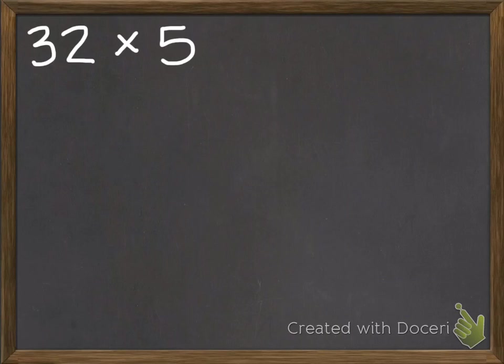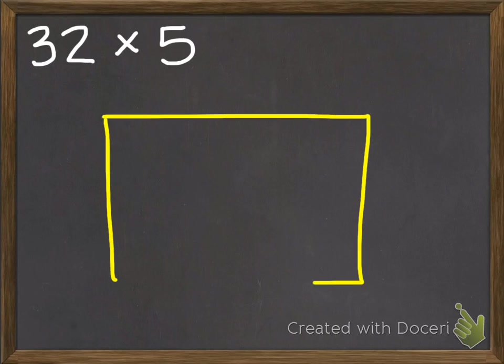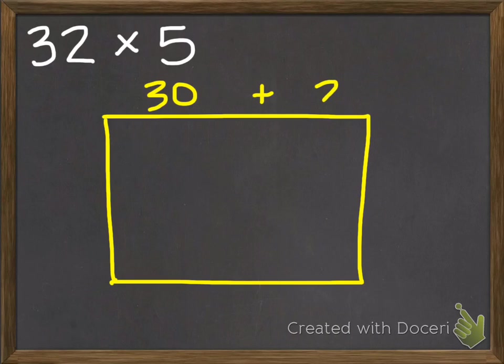Let's try another problem. 32 times 5. So I'm making my large rectangle. And I know that this would be 30 plus 2 because I'm breaking down that large number. And this side would be 5.